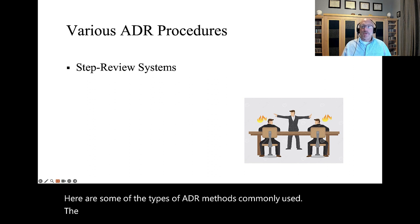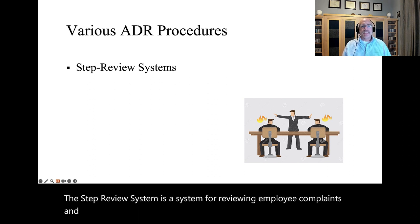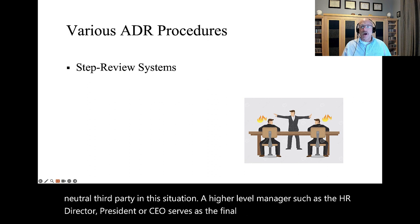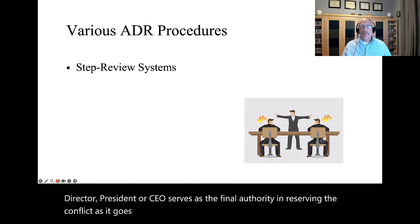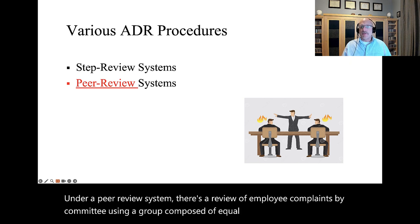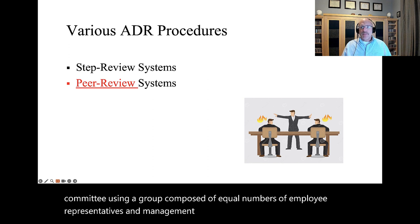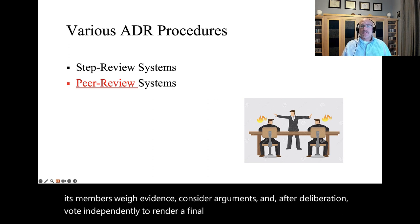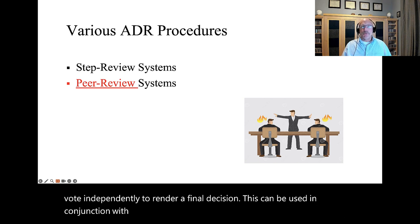The STEP review system is a system for reviewing employee complaints and disputes by successively higher levels of management. There is no neutral third party in this situation. A higher level manager such as the HR director, president, or CEO serves as the final authority in resolving the conflict as it goes up the hierarchy. Under a peer review system, there is a review of employee complaints by committee using a group composed of equal numbers of employee representatives and management appointees. It functions as a jury since its members weigh evidence, consider arguments, and after deliberation vote independently to render a final decision. This can be used in conjunction with a STEP review system to enhance a sense of fairness.